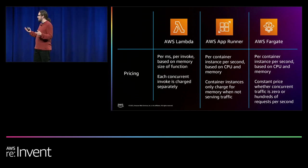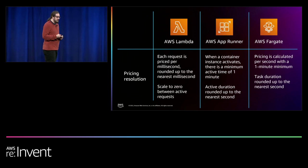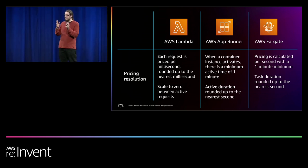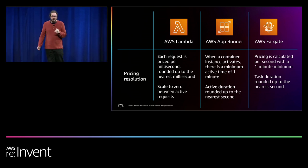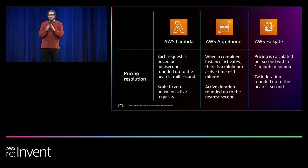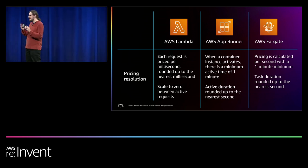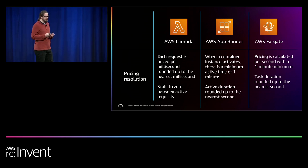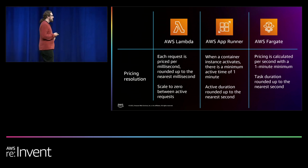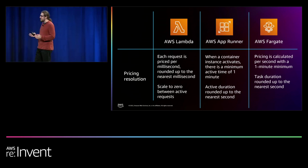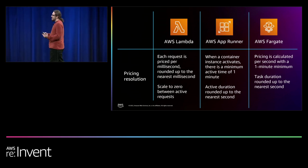AWS Fargate has a constant price based on CPU and memory whether or not you're receiving any traffic. On resolution: Lambda can scale to zero between each request, even at millisecond resolution — if there's a gap of seconds between requests, Lambda optimizes all the way to zero. With AppRunner, every activation lasts a minimum of one minute, with duration rounded up to the nearest second. For AWS Fargate, pricing is calculated per second with a one-minute minimum, and it's up to you to optimize starts and stops to avoid running containers that aren't doing anything.